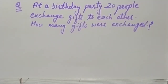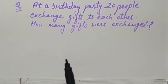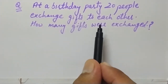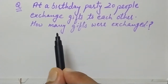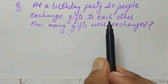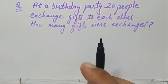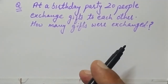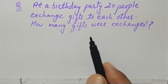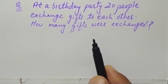Welcome to this YouTube channel. Let's do this tricky question. The question is: at a birthday party, 20 people exchange gifts with each other — how many gifts were exchanged? It means there are 20 people in the party, and everybody is giving gifts to others. We need to find out the number of gifts which were exchanged in the party.